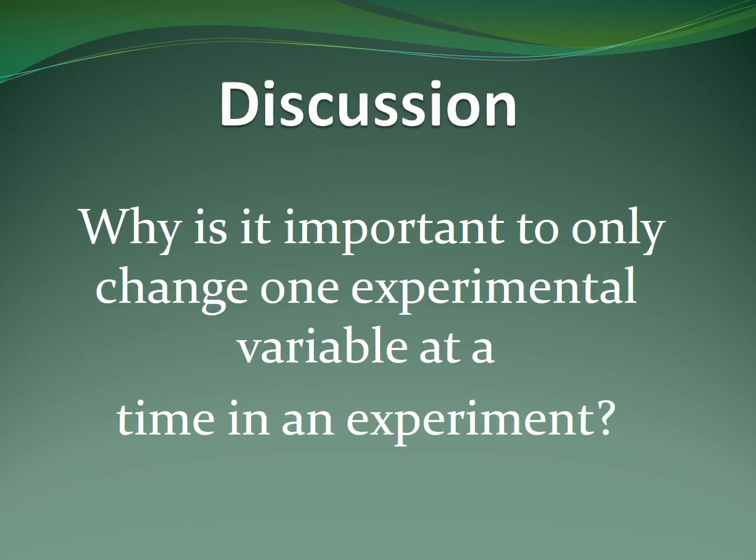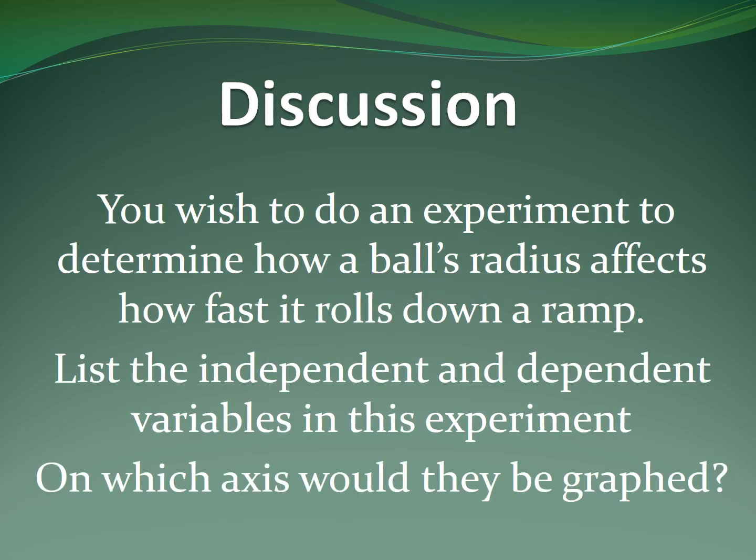Some important discussion questions that you should write on your notes: why is it important to only change one experimental variable at a time in an experiment? This brings into question, let's say for example you wish to do an experiment to determine how a ball's radius affects how fast it rolls down a ramp. List the independent and dependent variables in this experiment. On which axis would they be graphed?